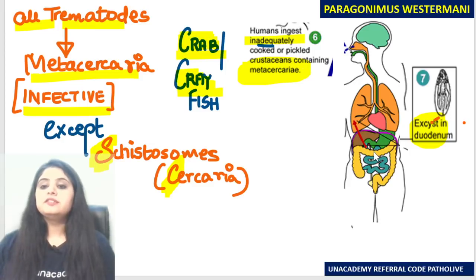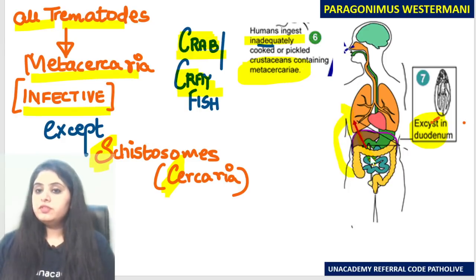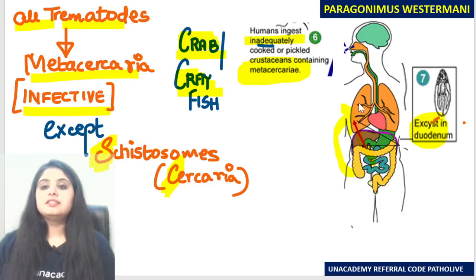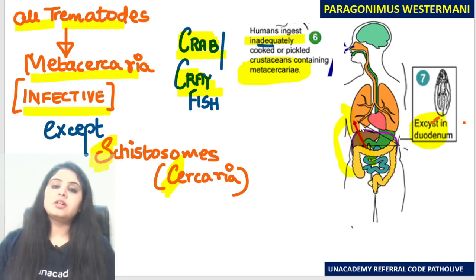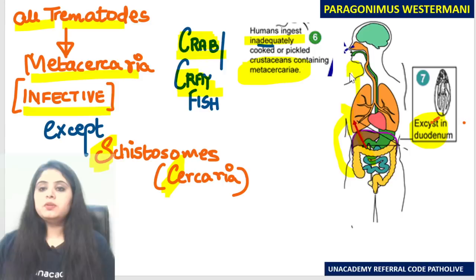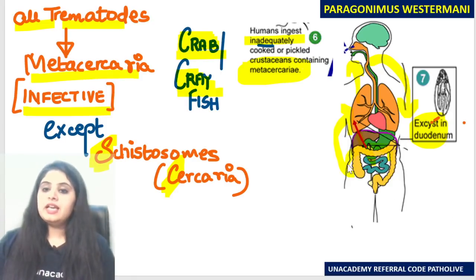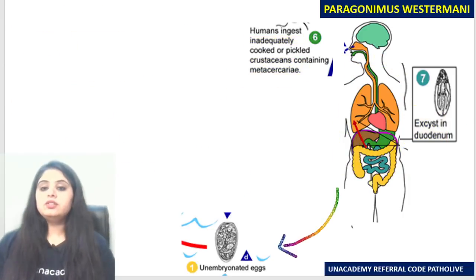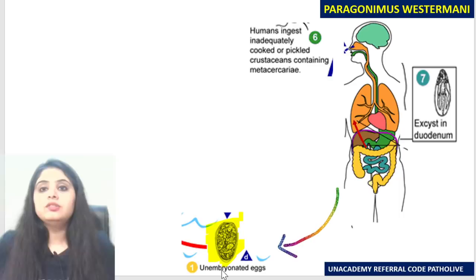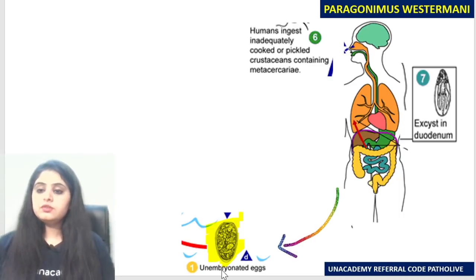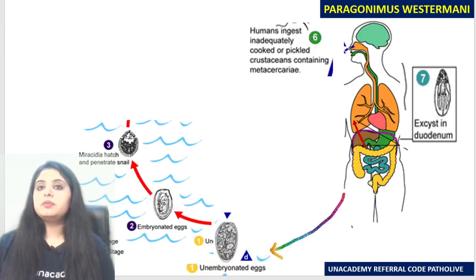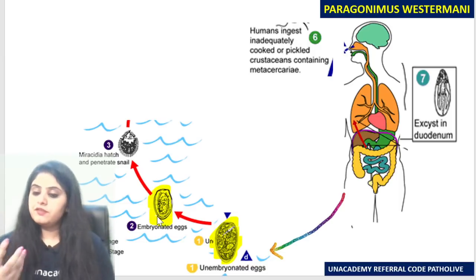The metacercaria larva enters the GI tract, exists in the duodenum, then pierces the intestinal wall, crosses the cavity and diaphragm, and reaches the lungs. In the lungs, the patient starts complaining of sputum and may cough it up. When the patient swallows the sputum back, the organism reaches the intestine again — which means the organism can then be passed out in the form of eggs in the stool sample.